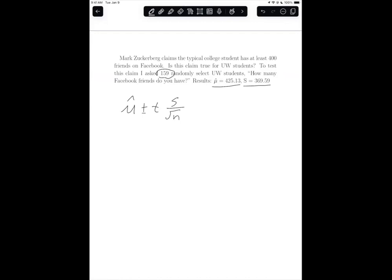And to find t, we need the degrees of freedom, or delta. And in this case, that is n minus 1, and so that equals 159 minus 1 equals 158.